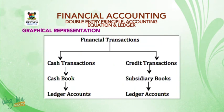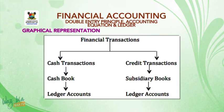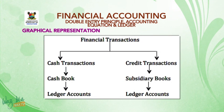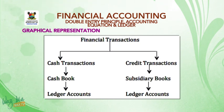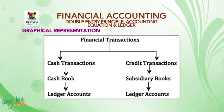We now have a graphical representation of financial transactions. Under cash transactions, they are posted to the cash book and from the cash book to ledgers. Under credit transactions, all credit transactions are posted to subsidiary books and from subsidiary books to the ledger accounts.